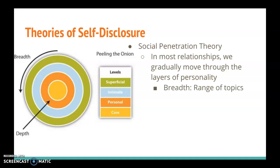The breadth of information shared is the range of topics that we feel comfortable sharing with one another. So maybe in one relationship you can talk to your friend about just about anything from politics to sex, whereas in a different relationship you know that those kinds of topics are off the table. Each relationship that we have has a different range of topics, a different breadth that is acceptable to discuss within that relationship.